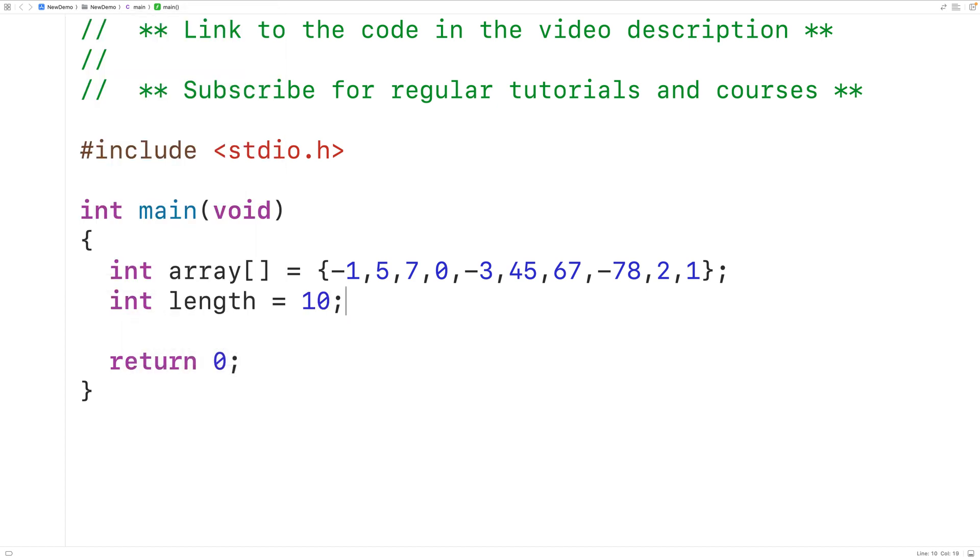Now to print out only the positive numbers in the array we'll create a loop to examine each array element and only if that array element is a positive number are we going to print it out.